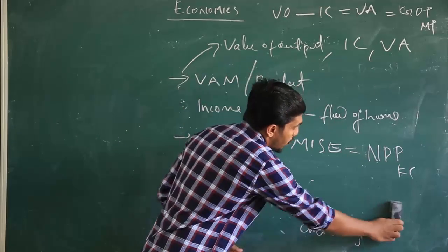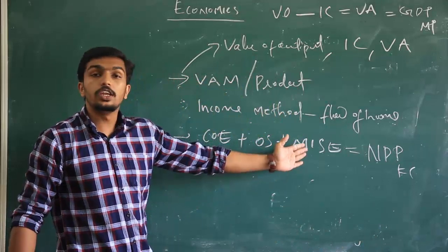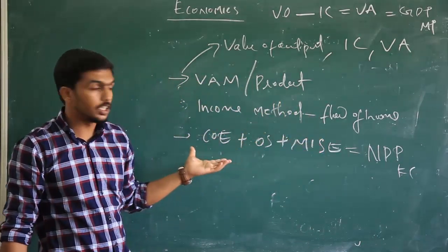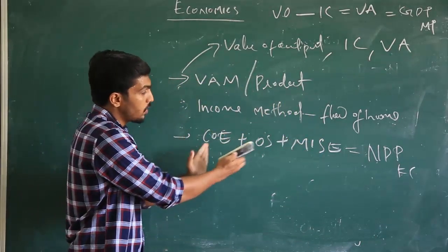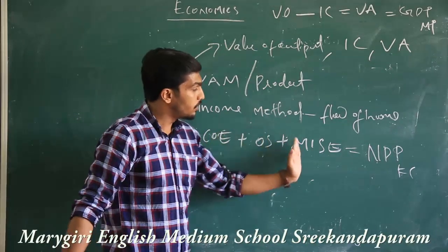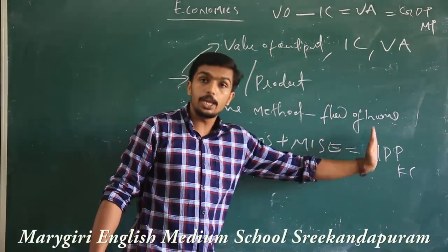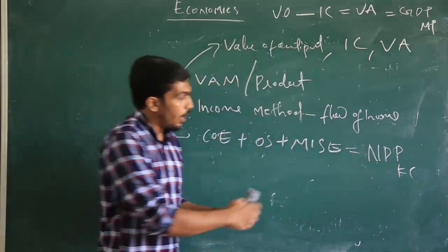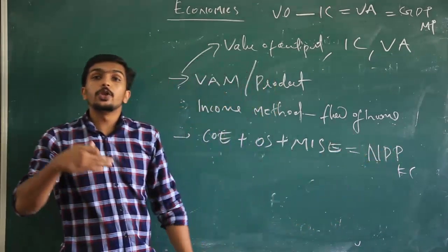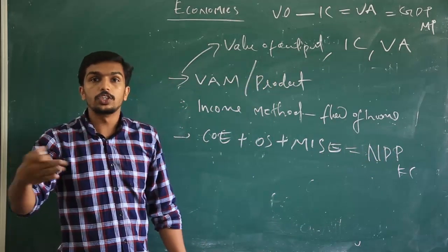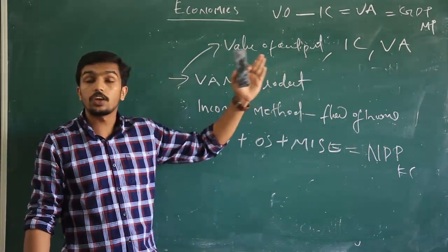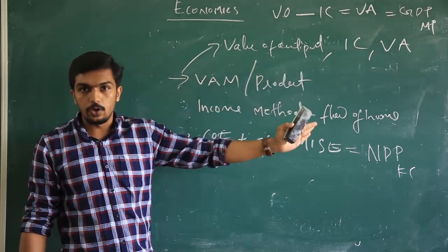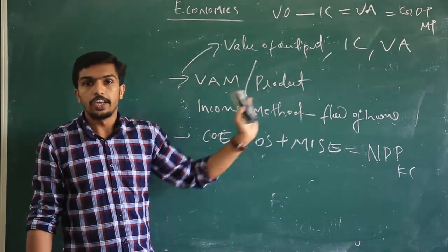Mixed income means the income from other economic activity, which is also considered in finding national income. So: compensation of employees plus operating surplus plus mixed income from self-employed activities gives us NDPFC. After finding NDPFC, we can easily convert it into GDPFC or any other form by using the factor cost value, market price value, depreciation, and net factor income from abroad — as we already discussed.